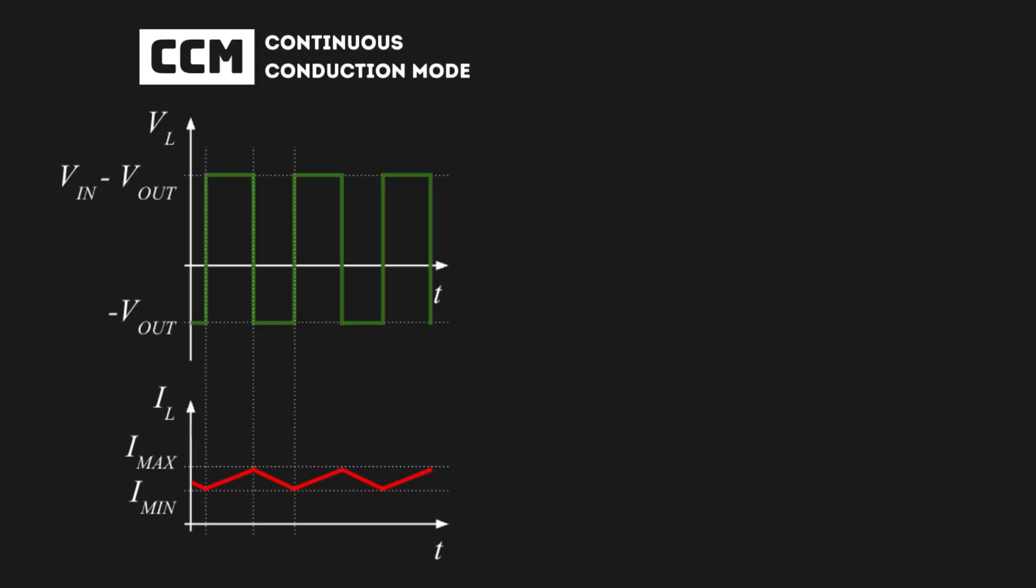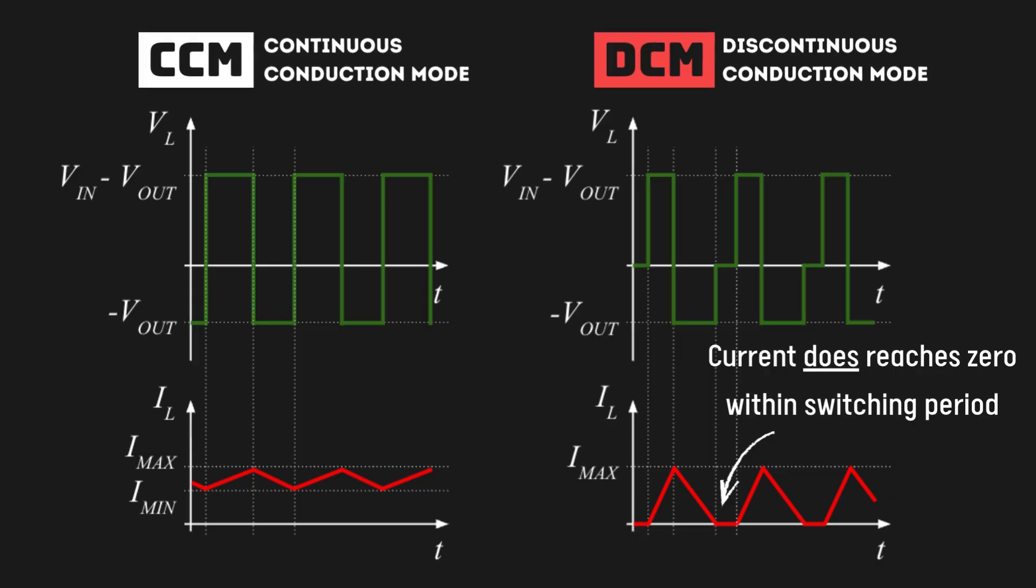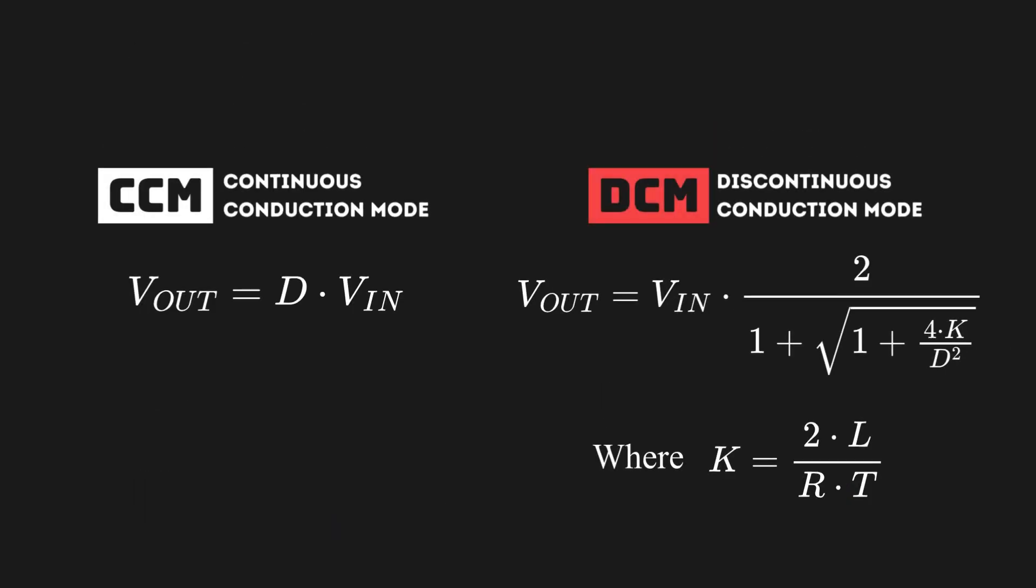In steady state, a buck is operating in CCM if the inductor never fully discharges, which can be seen on its current ripple. But if the inductor's current reaches zero within a switching period, it is then operating in DCM and several new dependencies appear on its equation.